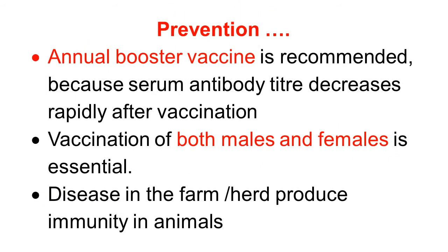Continuing the discussion of prevention: annual booster vaccination is required because the serum antibody titer decreases very rapidly after vaccination, so vaccination is required annually to maintain the antibody titer. Vaccination of both bulls and females is also essential to completely eliminate the infection. Disease in the farm or herd can produce immunity in animals, so sometimes automatic cure is also observed because of the immunity caused by the disease.